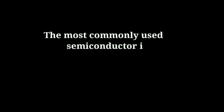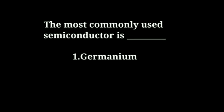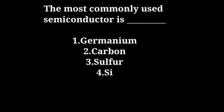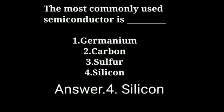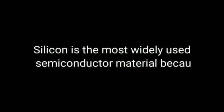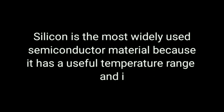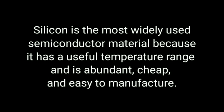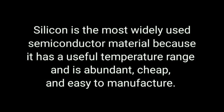Next question: The most commonly used semiconductor is? Option 1: Germanium. Option 2: Carbon. Option 3: Sulfur. Option 4: Silicon. Answer is silicon. Silicon is the most widely used semiconductor material because it has a useful temperature range and is abundant, cheap, and easy to manufacture.